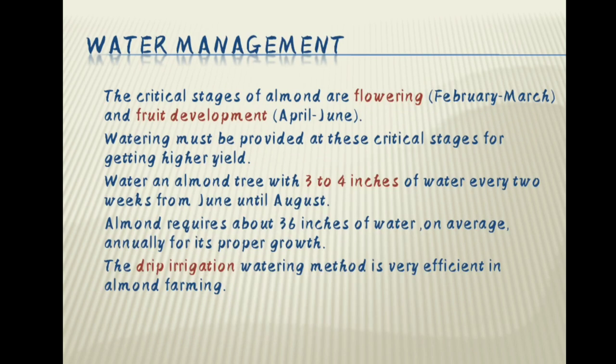Water management. The critical stages of almond are flowering from February to March and fruit development from April to June. Watering must be provided at these critical stages for getting higher yield. Water an almond tree with 3-4 inches of water every 2 weeks from June until August. Almond requires about 36 inches of water on average annually for its proper growth. The drip irrigation watering method is very efficient in almond farming.